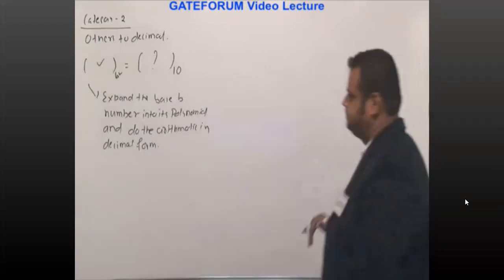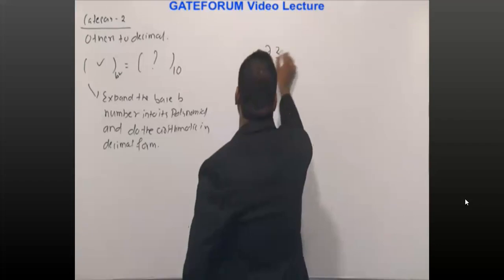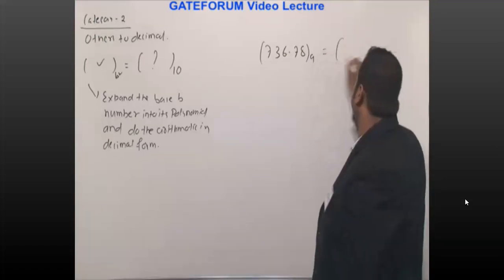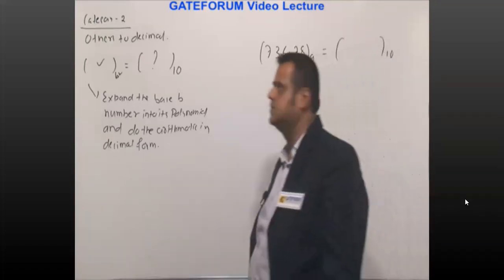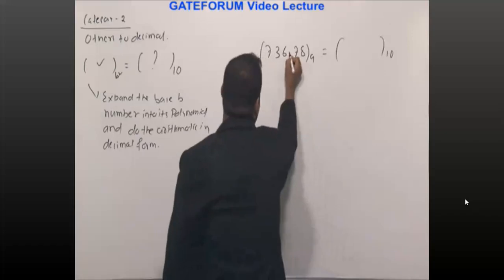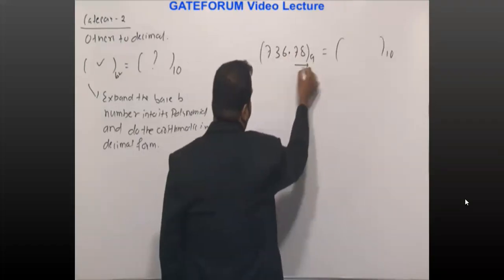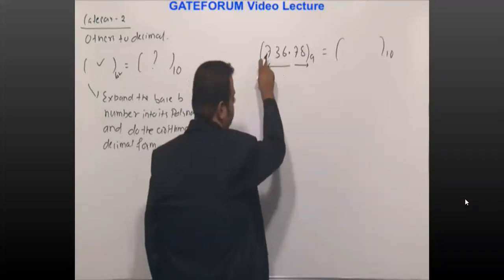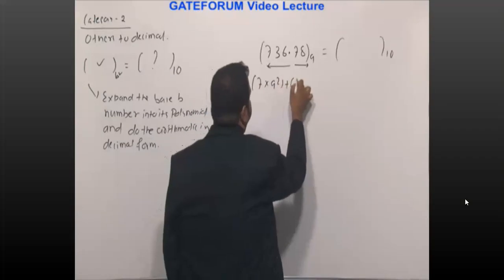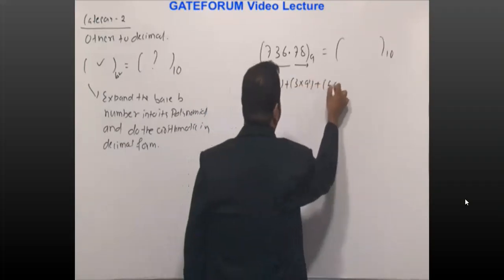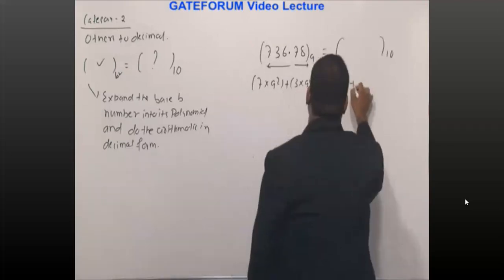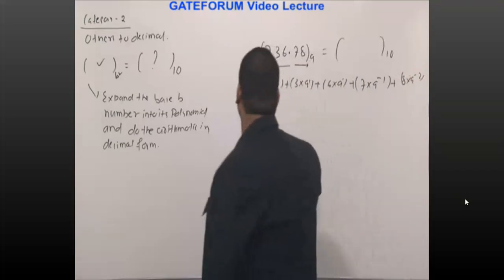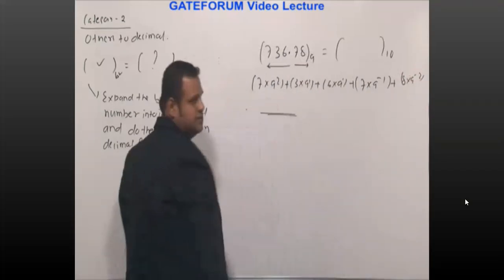This statement may not be clear, so let's take an example. Suppose 736.78, base is 9. If I want to convert this into base 10, you take this radix point as your reference. Towards the left, decreasing power of 9; towards the right, increasing negative power of 9. So: 7 × 9², plus 3 × 9¹, plus 6 × 9⁰, plus 7 × 9⁻¹, plus 8 × 9⁻². I don't have a calculator, but you can solve this and write the answer.